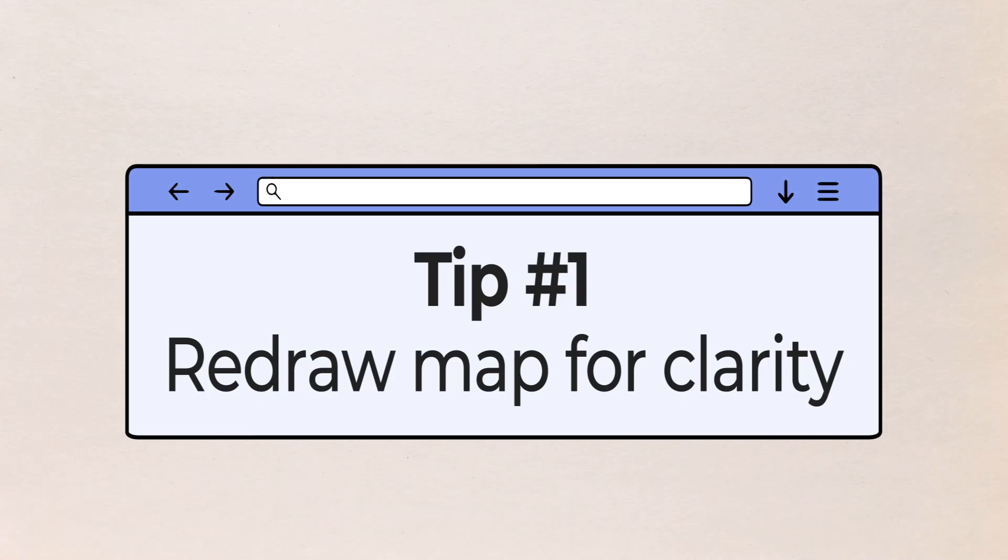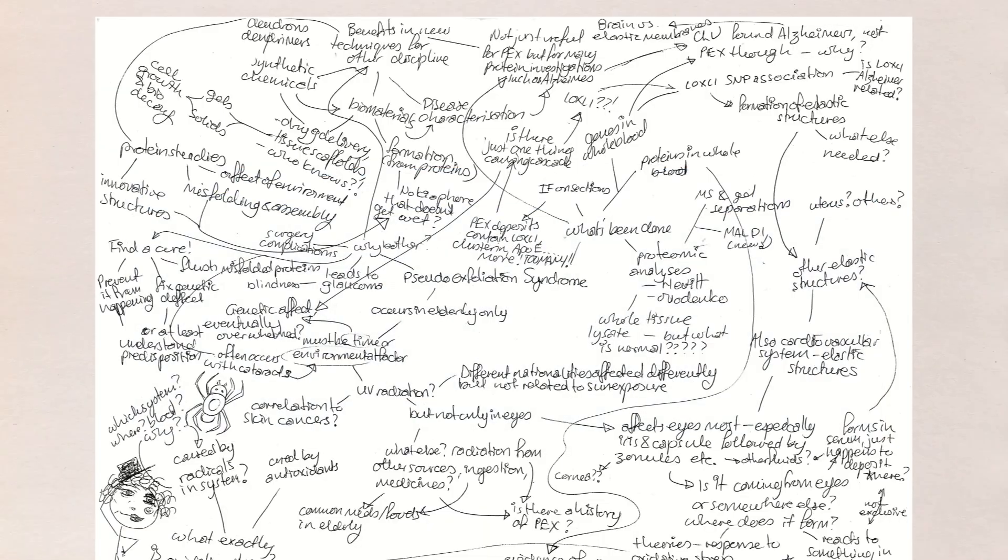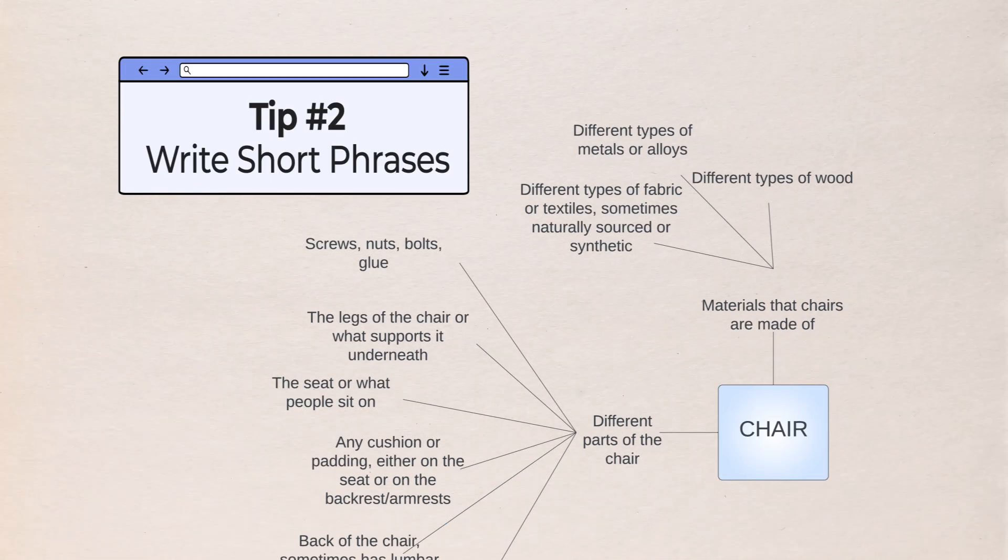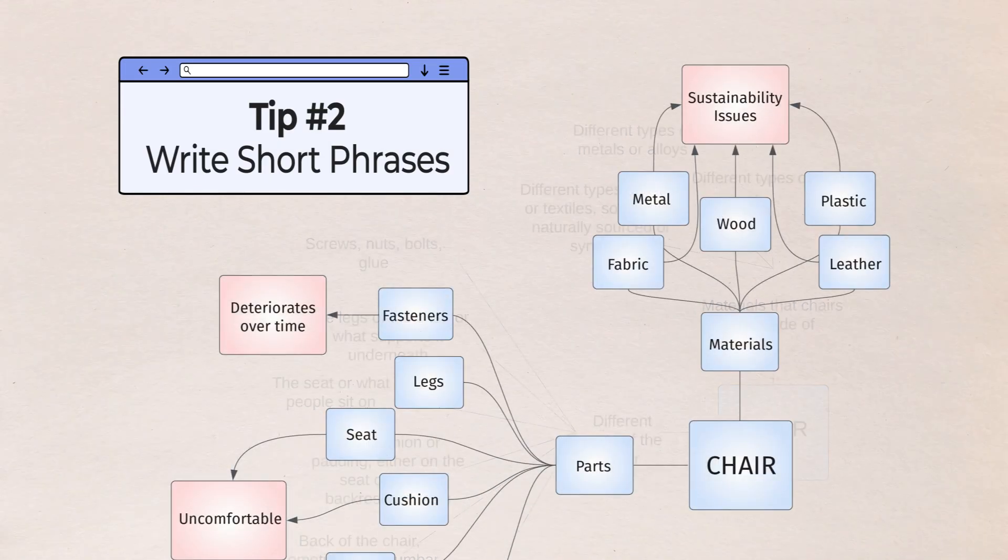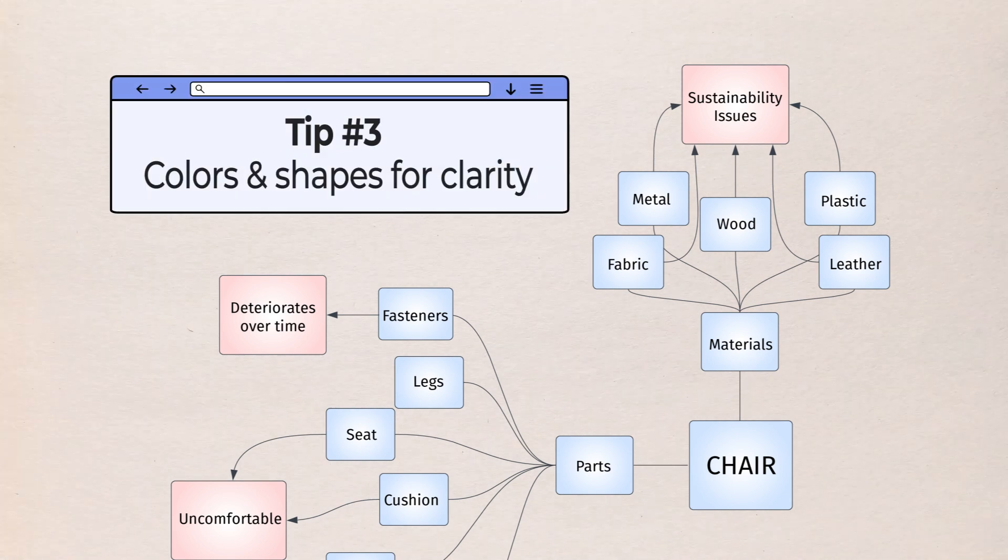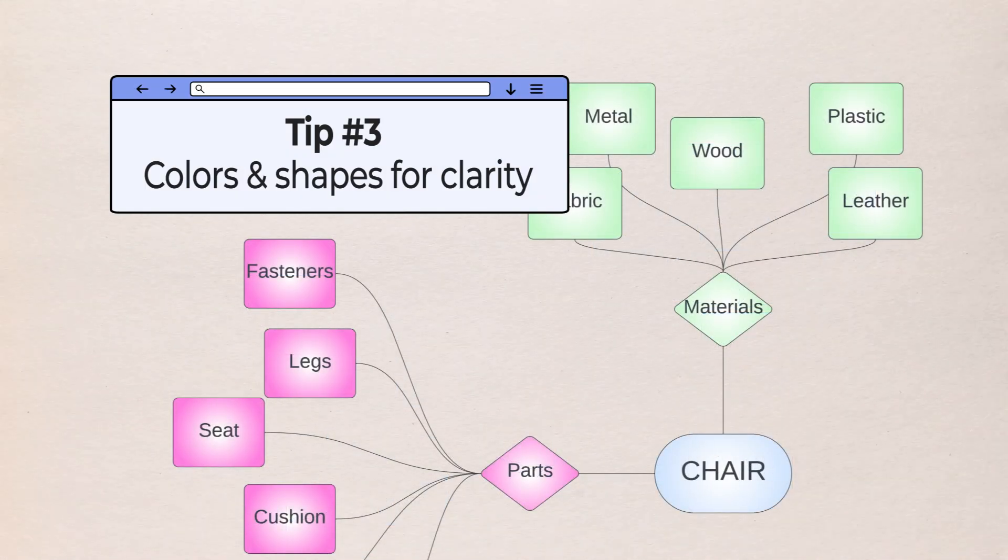Which leads us to tip one. Your mind map will probably be messy. As your logic and categories become clearer, you should reorganize or redraw the map. Tip number two: Keep your writing in short phrases. Too much text can make the mind map harder to understand. And tip number three: Use different colors or shapes to make your mind map clearer.